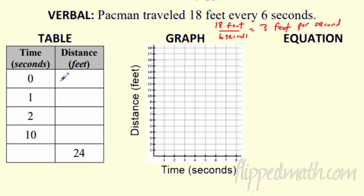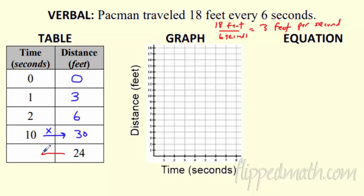Then we took that info and filled out a table. If he starts at 0 feet, after 1 second he'll be 3 feet because he's going 3 feet per second. After 2 seconds, he'll be 6 feet. You could keep the pattern going, or use the shortcut: if you just want 10 seconds, you say 10 times 3, which gives you 30 feet. What if I give you the distance and ask for the time? You go backwards — that's going to happen at 8 seconds. How did I know that? We divide. These are your x values and these are your y values.